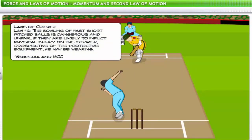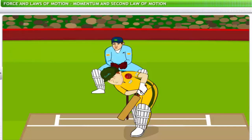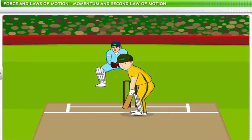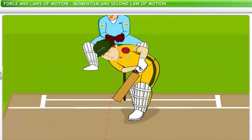According to Law 42 of the Laws of Cricket, the bowling of fast short-pitched balls is dangerous and unfair if they are likely to inflict physical injury on the striker, irrespective of the protective equipment he may be wearing. How could a small object like a ball inflict injury on a cricketer? The impact of a moving object differs based on its momentum, which is the product of the body's mass and velocity. A bowling technique from the 1930s called 'bodyline' involved aiming fast-paced balls at the shoulders of batsmen, and many batsmen have been injured due to balls traveling with high momentum.